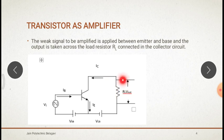During the positive half cycle of the input signal, the forward bias across the emitter-base junction is increased. Hence more electrons flow from the emitter to the collector through the base, causing an increase in the collector current. The increased collector current produces a greater voltage drop across the resistance RC.